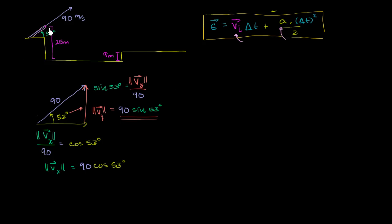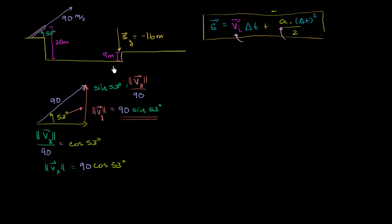So how do we use this to figure out how long we're in the air? What is the displacement? If we're starting at 25 meters high and we're going to 9 meters high, over the course of this trajectory the projectile will be displaced downwards 16 meters. Our displacement in the vertical direction is going to be equal to negative 16 meters, because 25 minus 9 is 16.